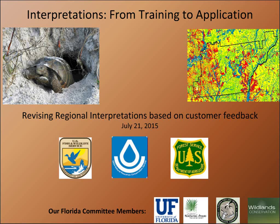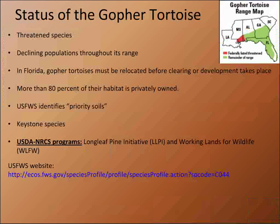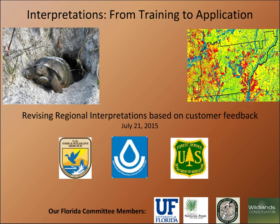Georgia also has concerns about the accuracy of the interpretation and has recently acquired a 16,000-burrow XY dataset that they can use to intersect with SSURGO. The plan is to systematically tweak the interpretation further. Most of this interest is due to the possible federal listing as threatened throughout the Gopher Tortoise's range. This presentation will be two parts: one, data mining and analysis; and second, interpretation and modification. Michael is going to talk about the status of the Gopher Tortoise.